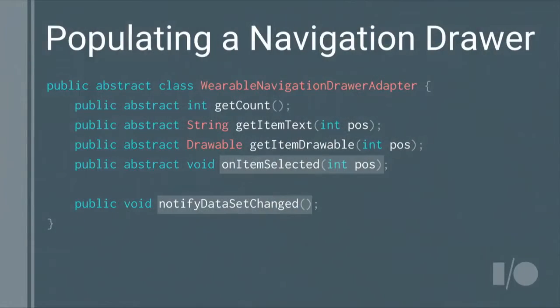There are two other methods to discuss: OnItemSelected and NotifyDataSetChanged. OnItemSelected is called when the user navigates left or right within the drawer, giving you the opportunity to change the underlying view — for instance, switching from the mailbox section to the settings section. NotifyDataSetChanged is called when the data backing the adapter changes after the adapter was set, notifying the navigation drawer to redraw with new icons and labels.